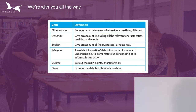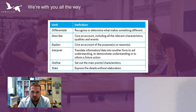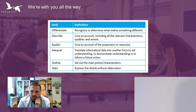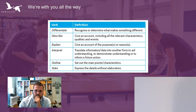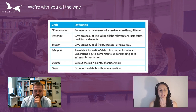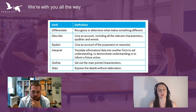These are the six command verbs. Starting with differentiate — it's looking at explaining the difference, recognizing or determining what makes something different. All they're asking you to do is compare and contrast. For example: what makes the project sponsor role different to a project manager? What makes a matrix organization type different to a project organization? So differentiate is really focusing on the differences and distinctions.